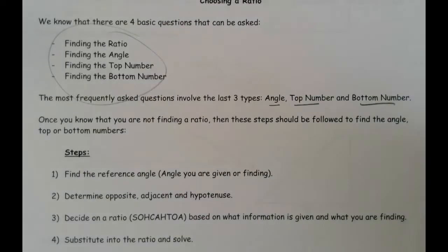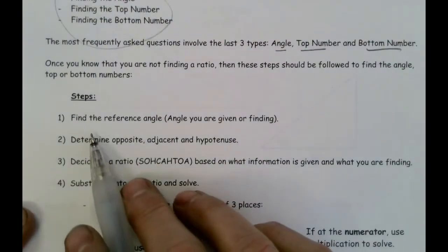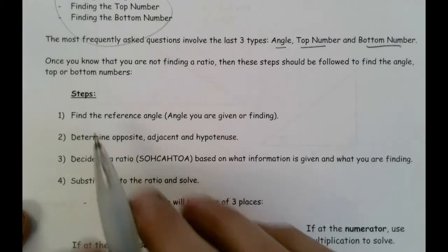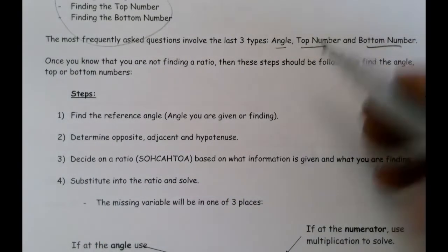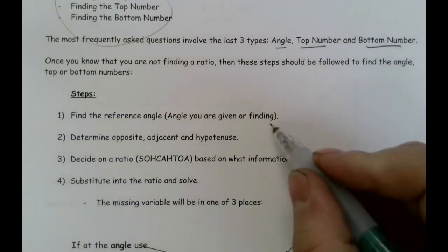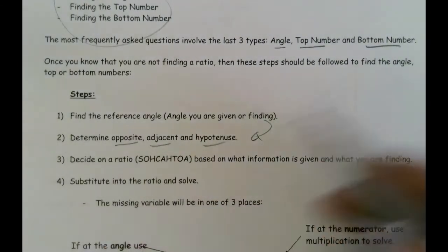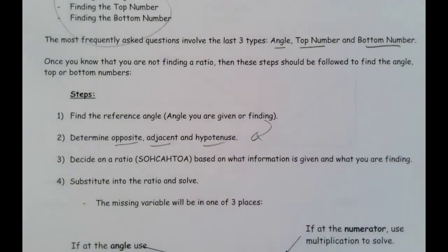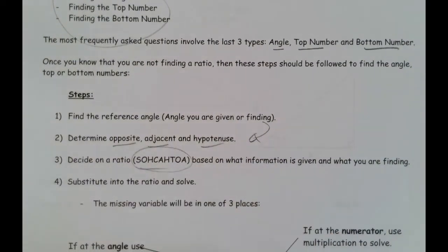What we're going to do first is find the reference angle. We've mentioned this before — you find that reference angle because it helps you determine the opposite, adjacent, and hypotenuse. From there, you can decide which ratio to use: SOHCAHTOA. Then you substitute in and do your solving.